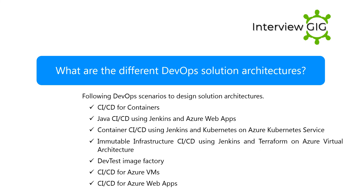What are the different DevOps solution architectures? Following DevOps scenarios to design solution architectures: CI/CD for containers, Java CI/CD using Jenkins and Azure Web Apps, Container CI/CD using Jenkins and Kubernetes on Azure Kubernetes Service, Immutable infrastructure CI/CD using Jenkins and Terraform on Azure Virtual Architecture, DevTest Image Factory, CI/CD for Azure VMs, and CI/CD for Azure Web Apps.